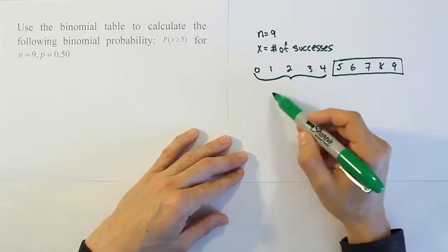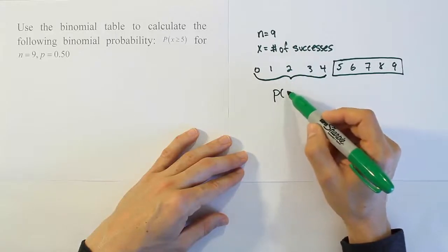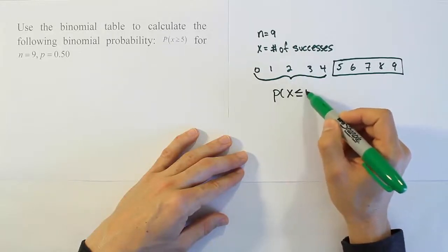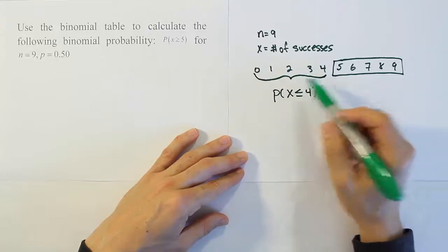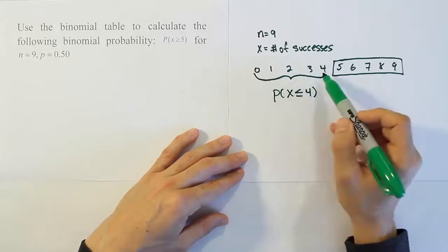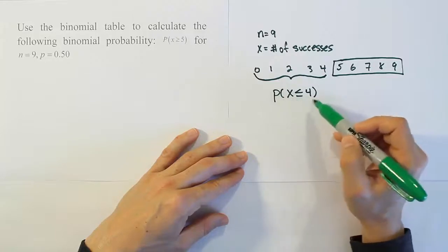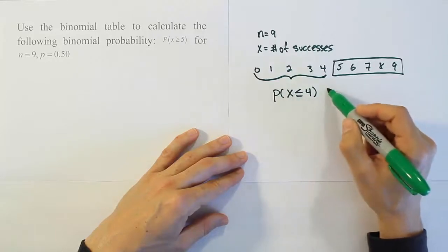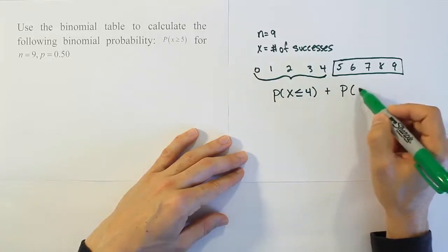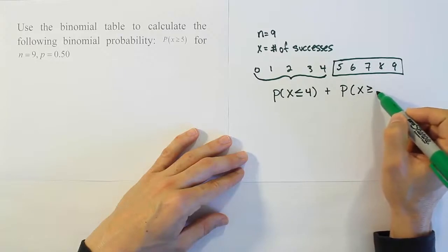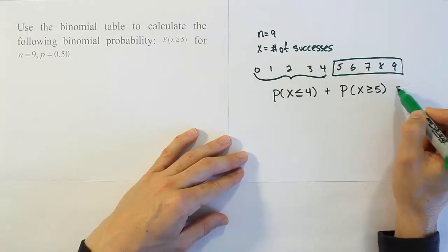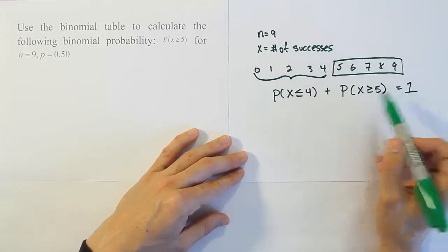So how would you describe this? This is the probability that x is less than or equal to 4. If I wanted to calculate the probability of x less than or equal to 4, and add that to the probability that x is greater than or equal to 5, what I end up with is the chance of 100%, or the probability equal to 1. Why is that the case?